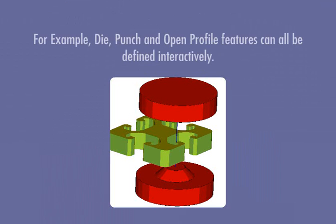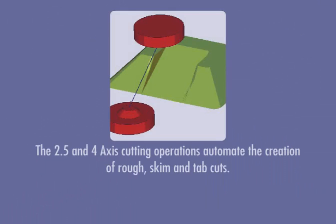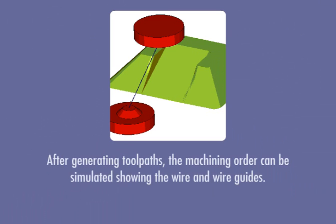For example, die, punch, and open-profile features can all be defined interactively. The 2.5 and 4-axis cutting operations automate the creation of rough, skim, and tab cuts. After generating toolpaths,